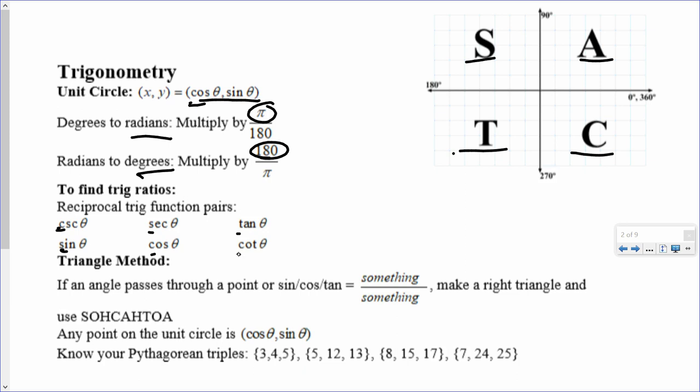So there's two different methods for finding your trig ratios. One is your triangle method. If it tells you that it passes through a point, or that sine, cosine, or tangent is something over something, make a right triangle, and use SOHCAHTOA. Once you use SOHCAHTOA, you just do the reciprocal of each of them to get the reciprocal functions.